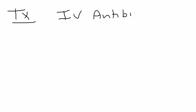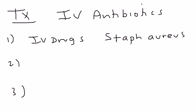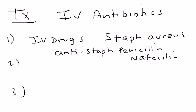So how do you treat it? The mainstay of treatment is IV antibiotics. I'll break it down into three basic categories. The first one is IV drug users — IV drug users most commonly are infected with an organism called Staph aureus, and when that happens they're given an anti-staph penicillin. Those include nafcillin and oxacillin. Nafcillin is probably the most common.